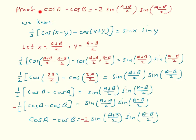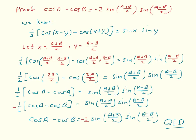Notice we want cosine a minus cosine b, but right now we have cosine b minus cosine a. To fix this, I pull out a factor of negative one, giving negative one-half times the cosine of a minus the cosine of b equals sine of a plus b over two, sine of a minus b over two. Multiplying through by negative two gives cosine of a minus cosine of b equals negative two, sine of a plus b over two, sine of a minus b over two. QED — the identity is now proven.